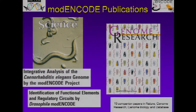Back in December 2010, a number of publications came out from the MODENCODE group. There were two papers in Science — one focused on the integrative analysis of C. elegans data, and the other on integrated analysis of the Drosophila data. Along with those were a number of companion papers in Nature, a Genome Research issue, and several other journals.